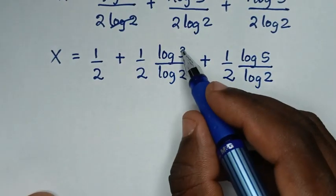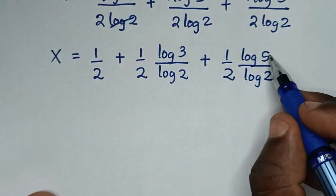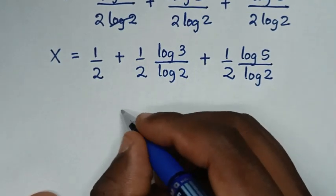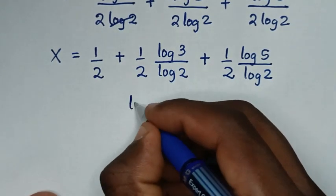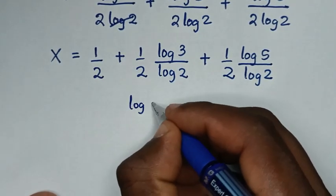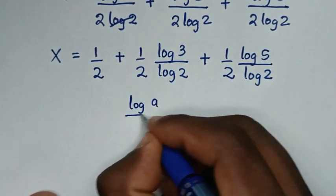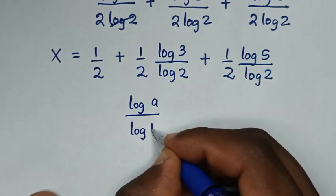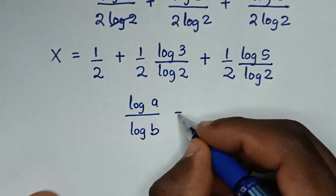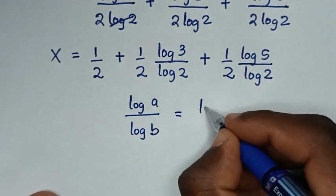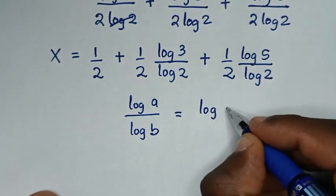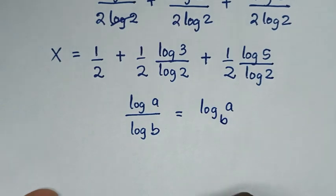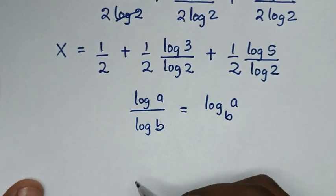And log of 3 over log of 2 is in the form of log(a)/log(b), which equals log of 3 base 2. Similarly, log of 5 over log of 2 equals log of 5 base 2.